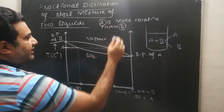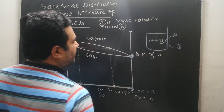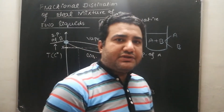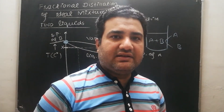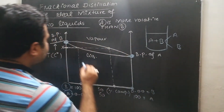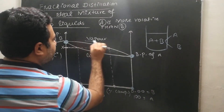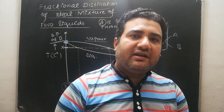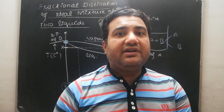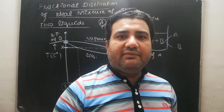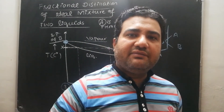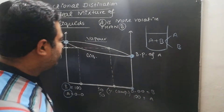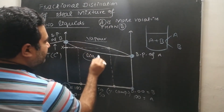Because A is more volatile, its boiling point is lower — this point shows the boiling point of A. B is less volatile, so its boiling point is higher. When liquids boil, two phases exist: the vapor state and the liquid state. One curve on the graph is obtained for the vapor state, and the other curve is for the liquid state. This graph is drawn by studying mixtures of A and B at different compositions — 10/90, 50/50, 90/10 — and the lower curve represents the liquid state.